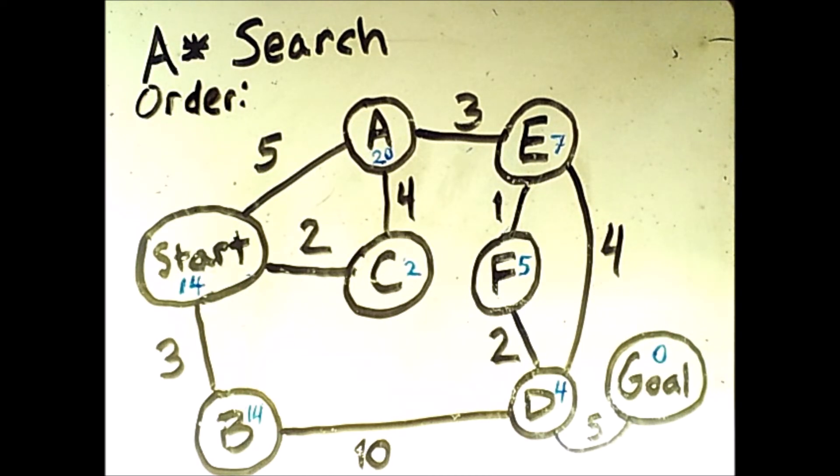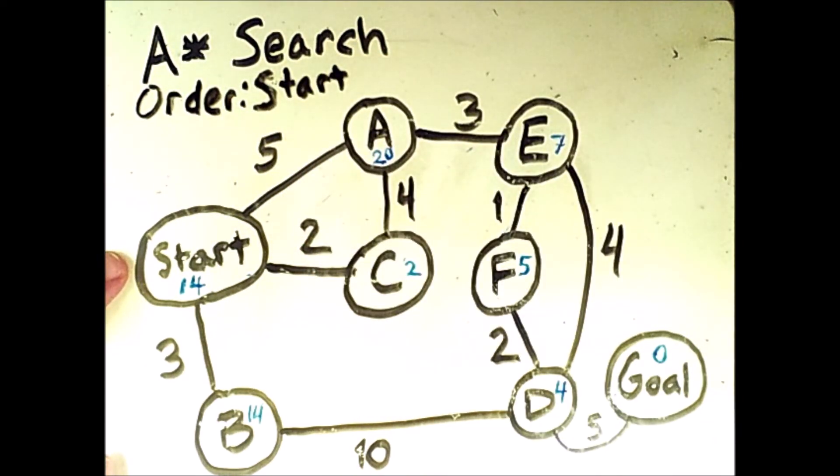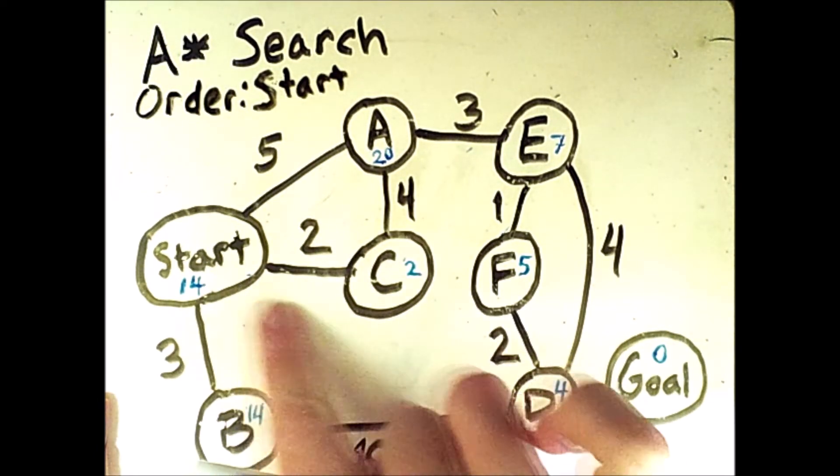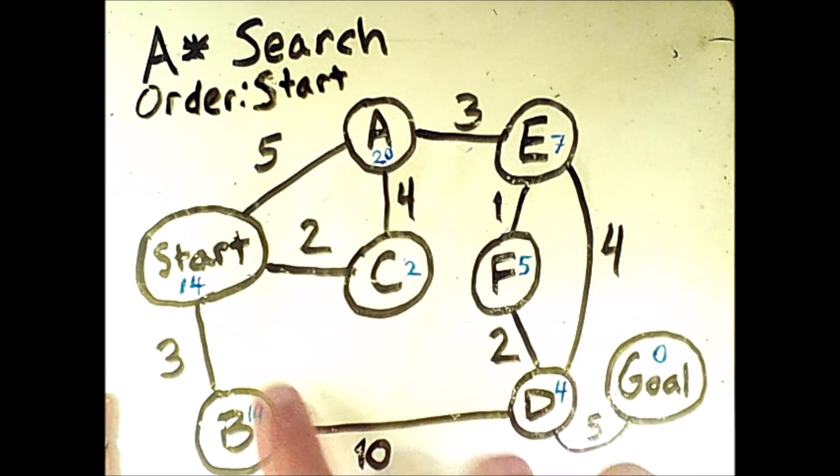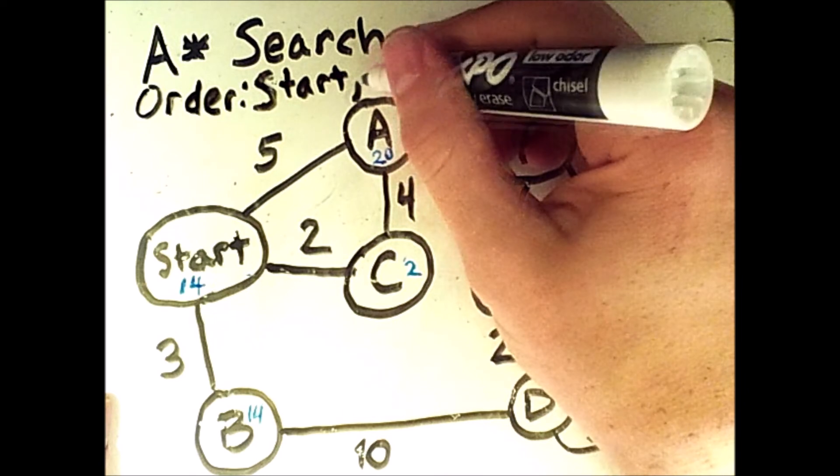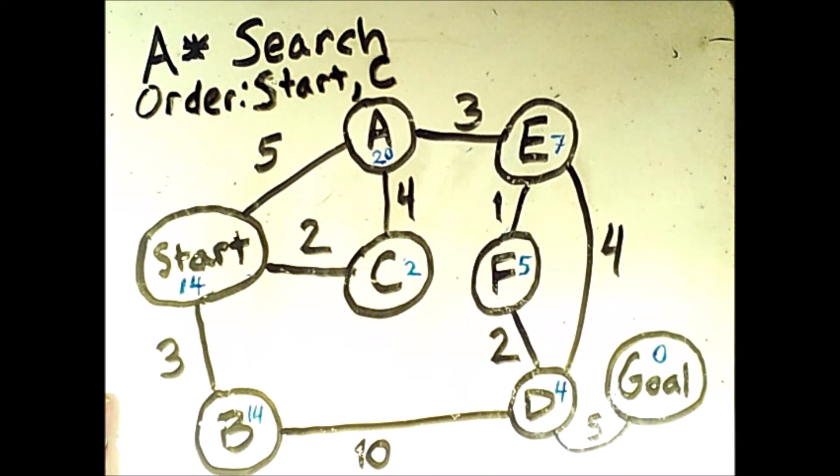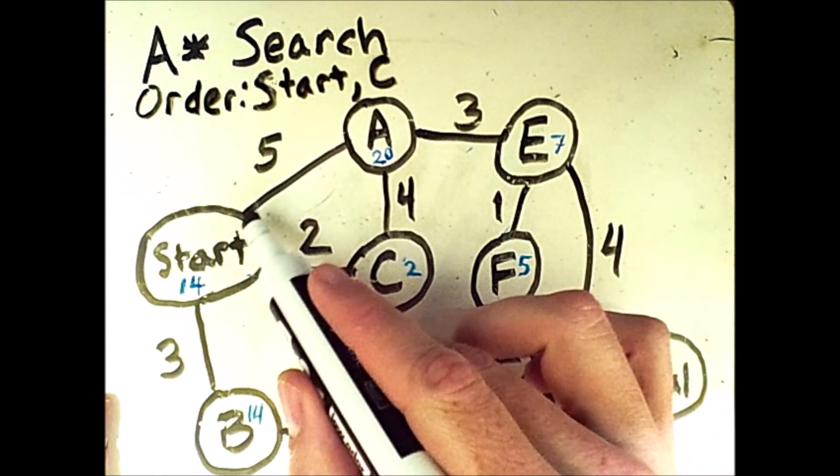So what happens if we go through the same procedure but using these values? We would still search the start state first. But now, when we compare options, c looks unbelievably cheap because the g value to get there is 2, and the heuristic value is 2. That's only 4, which is much less than the 5 plus 20 or the 3 plus 14. So we would check c next. From there, we have two options left, a and b. The cost or the priority value from a would be still the 5 plus 20. That's 25.